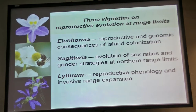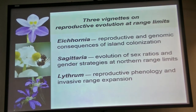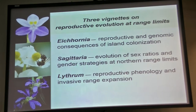Then I'm going to move to a completely different system — some of you botanists may know this plant. It's very common in Ontario and Quebec, and that's Sagittaria. This is an aquatic macrophyte where our studies at the range limits are showing some really interesting sexual system diversity not present in other parts of the range. I'll be talking about sex ratios and the generation of sexual system diversity in geographically marginal populations.